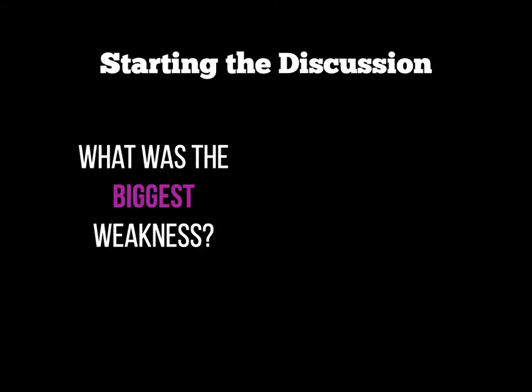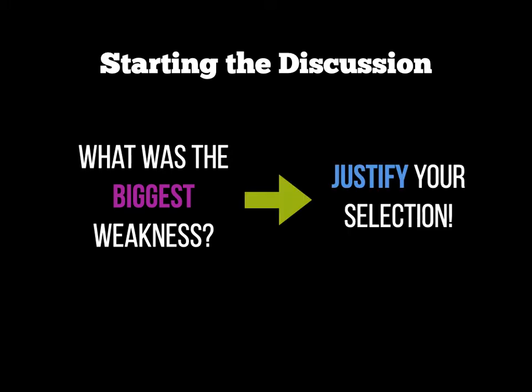At this point you'll need to identify, out of all of those weaknesses you've already discussed, what was the biggest weakness in your opinion. Technically there's no right or wrong answer, but the examiner may have a different opinion — and that's fine, because you just need to justify your choice. The weakness must be one of the weaknesses you've already identified previously: one of the skills, tactics, or fitness component weaknesses.